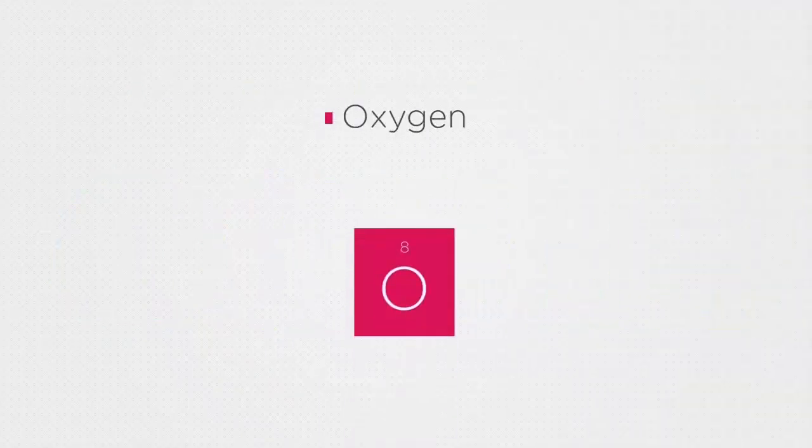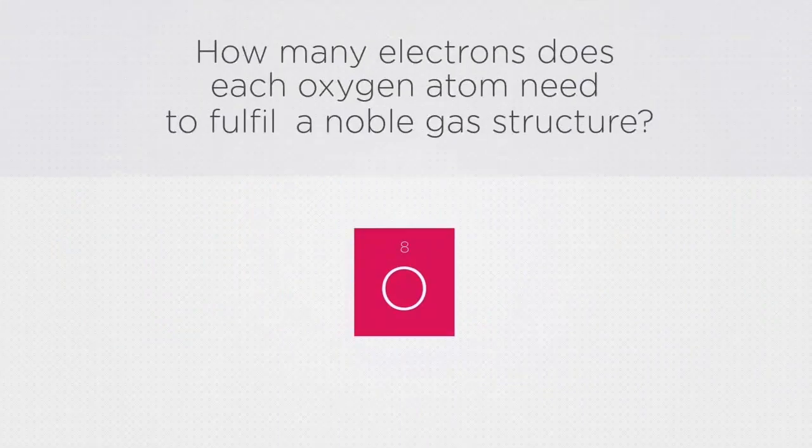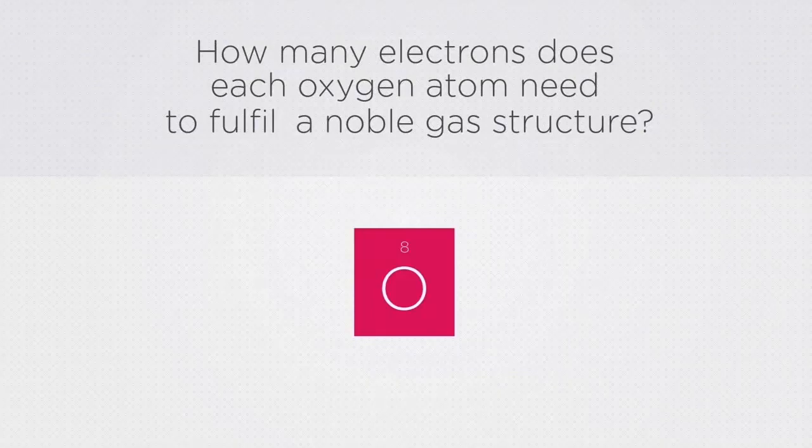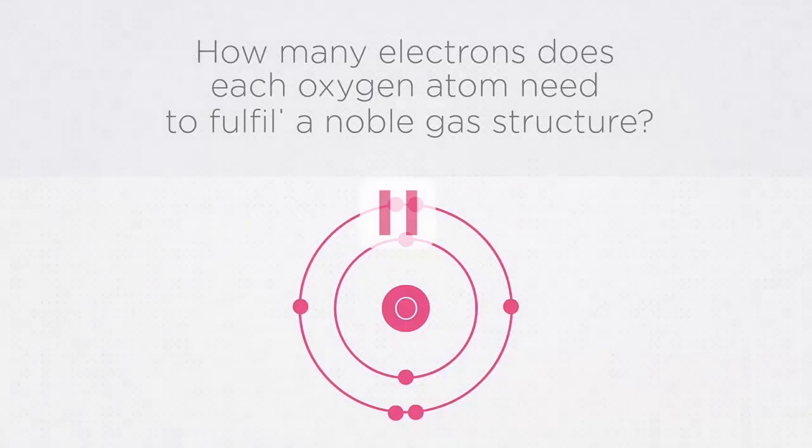In the next example we are going to consider oxygen. It's in group six, therefore how many electrons does each oxygen atom need in its outer shell to fulfill a noble gas structure? Remember, oxygen has eight electrons in total so we would need to fill the second shell. Pause the video and continue when you're ready.